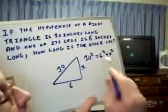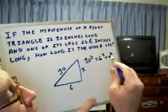What we do is we set up an equation. Ten squared equals six squared plus x squared.